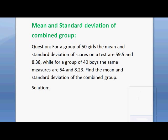Hello! Let us learn how to find the mean and standard deviation of a combined group. The question is: for a group of 50 girls, the mean and standard deviation of scores on a test are 59.5 and 8.38, while for a group of 40 boys, the same measures are 54 and 8.23. Find the mean and standard deviation of the combined group.